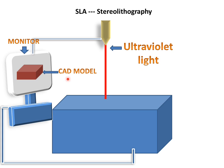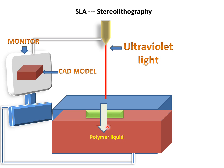This is the CAD model which we want to make in this process — this is our final product. This is a platform for moving down, which will carry our product layer by layer. This is a polymer liquid; in this process we will use polymer liquid.